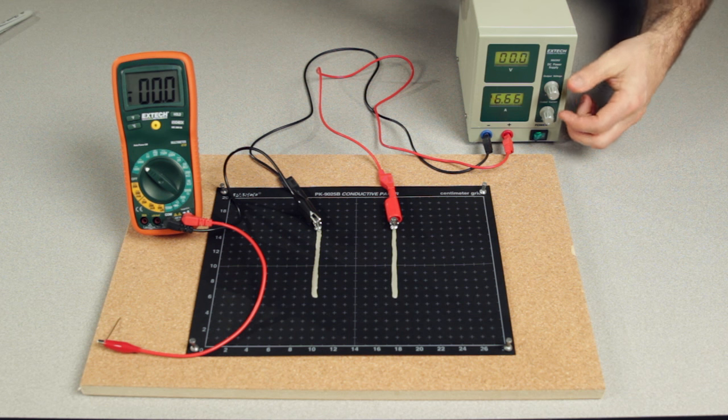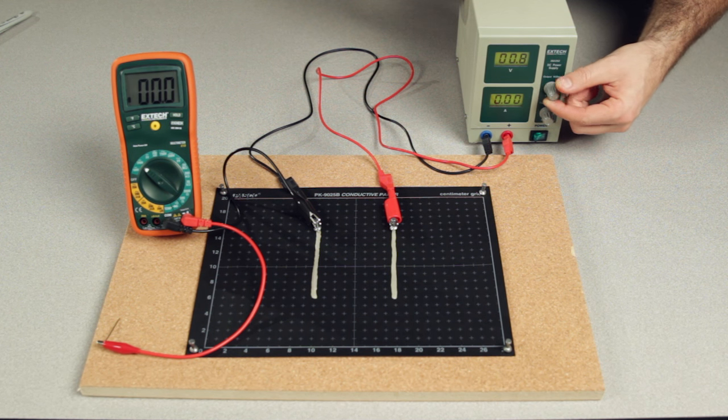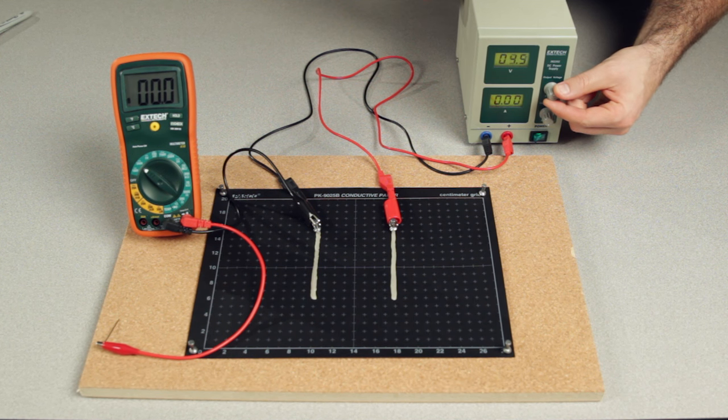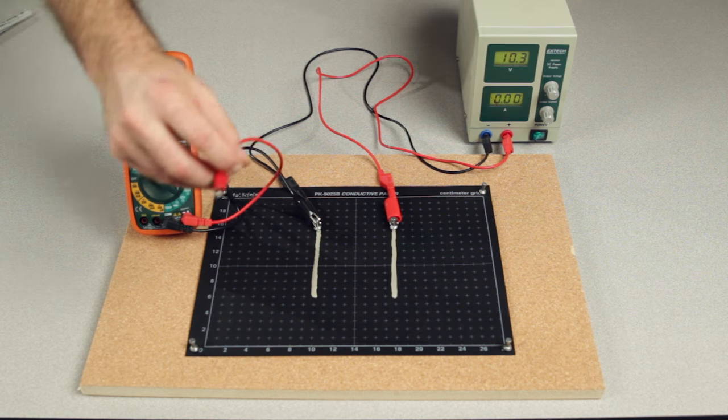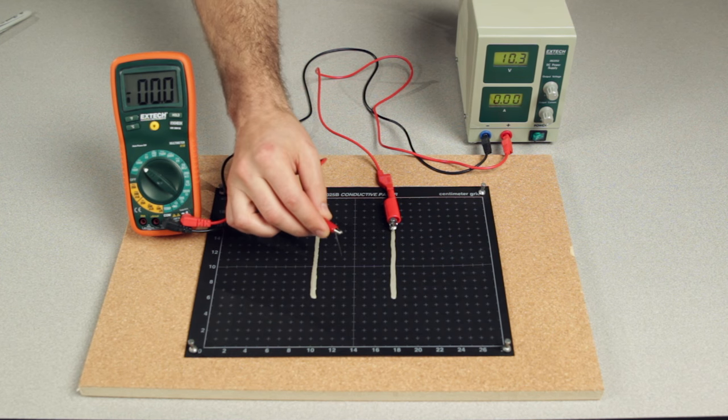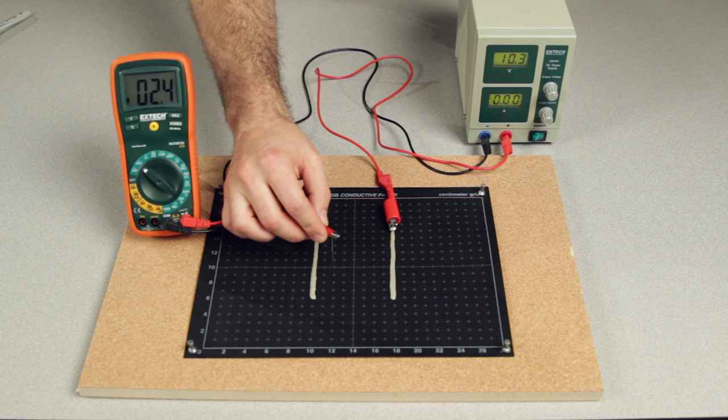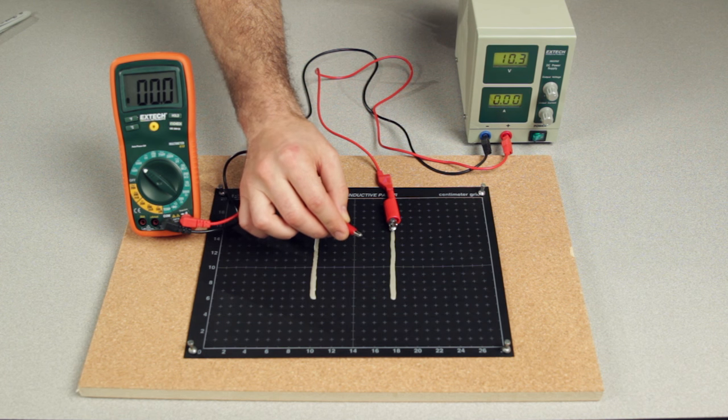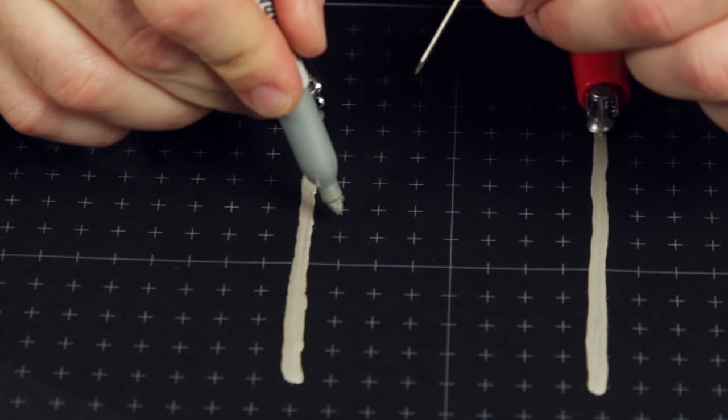Turn the power supply on and adjust it to a desired voltage between 5 and 20 volts. Touch the probe to the paper to measure the potential difference between the negative electrode and the probe location. Move the probe until the desired potential difference is measured and then mark the paper at this point.